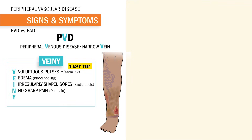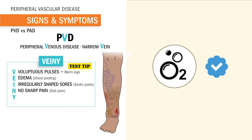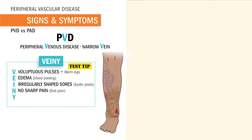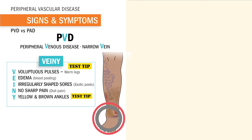N is for no sharp pain — instead we have dull pain. No sharp pain during exercise, because we don't have an oxygen problem. We have oxygen because we have pulses, unlike PAD where we have very sharp pain from the lack of oxygen. And lastly, Y is for yellow and brown ankles. Big test tip right there — it's the ankles.